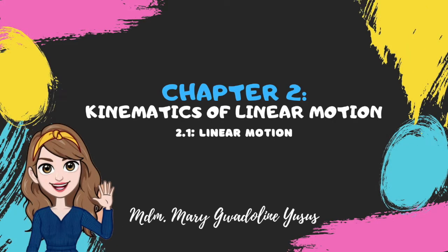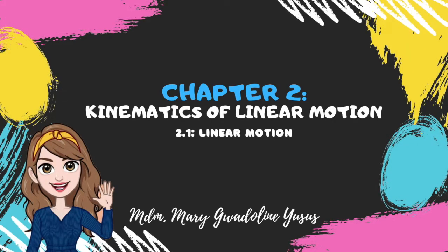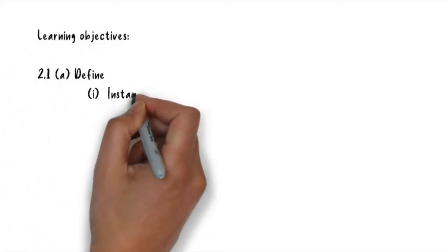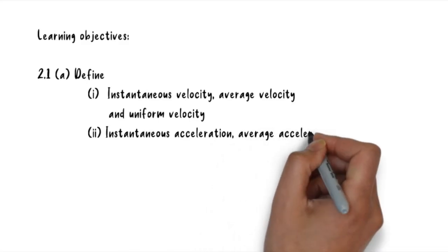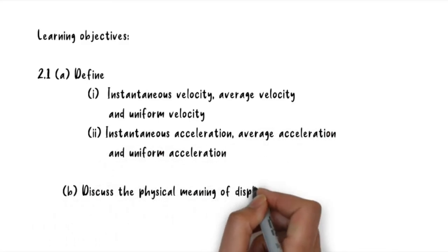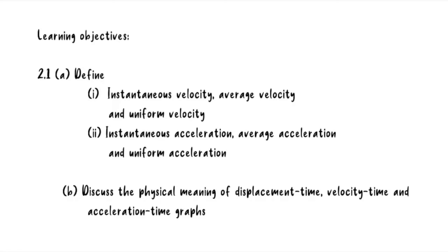Hello everyone. In this video I'm going to cover the second chapter, that is kinematics of linear motion. Kinematics of linear motion is the study of motion of an object without considering the effect that produced the motion. There are two types of motion: the first one is linear motion and the second one is projectile motion. In this video we're going to concentrate on the first part. Here are the learning objectives: the first one is to define instantaneous, average, and also uniform velocity and acceleration.